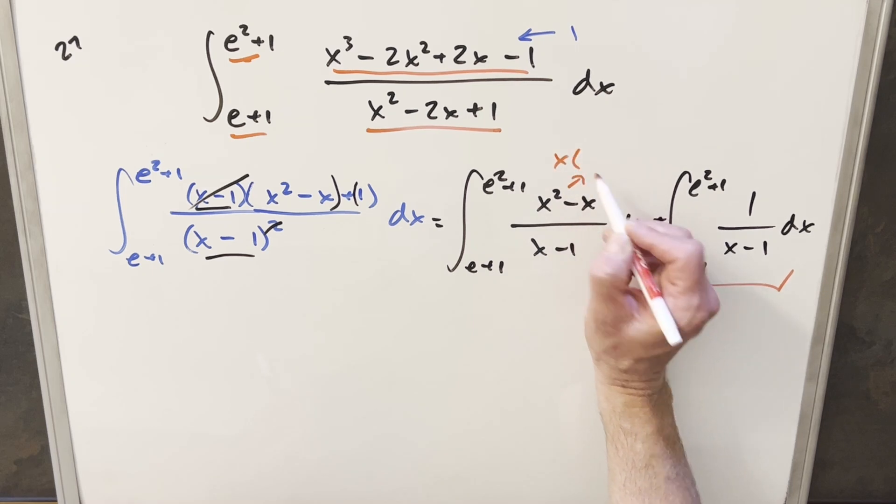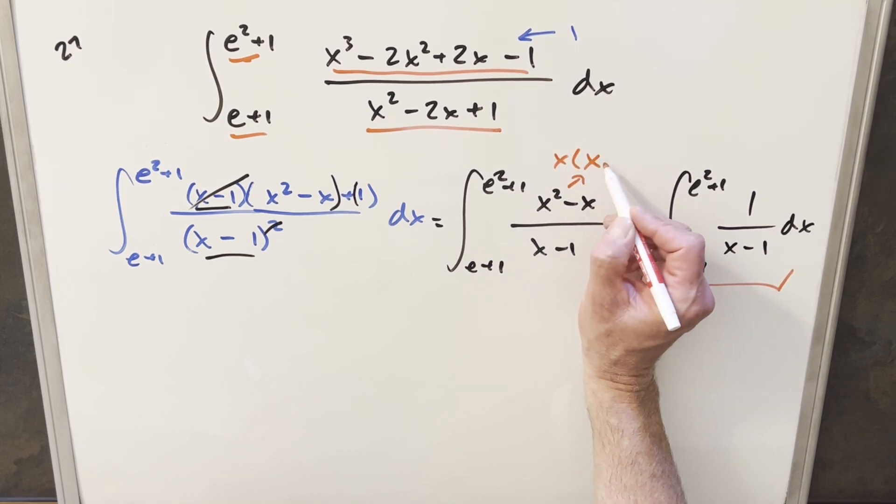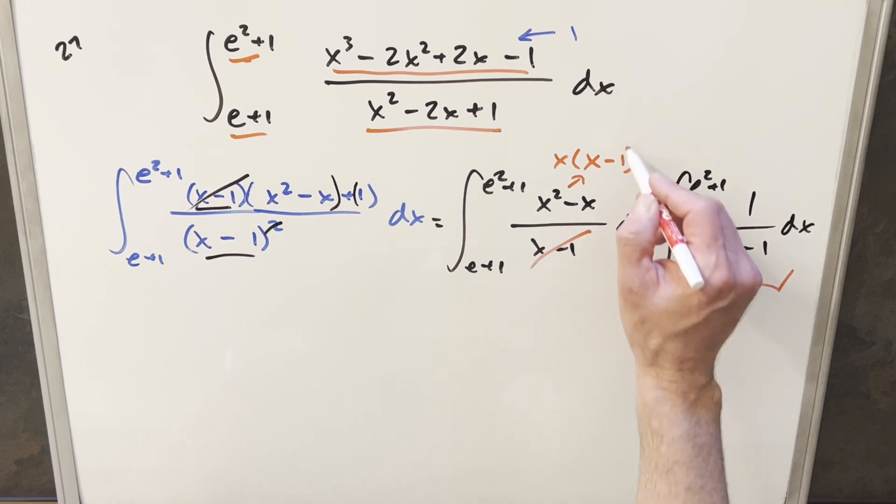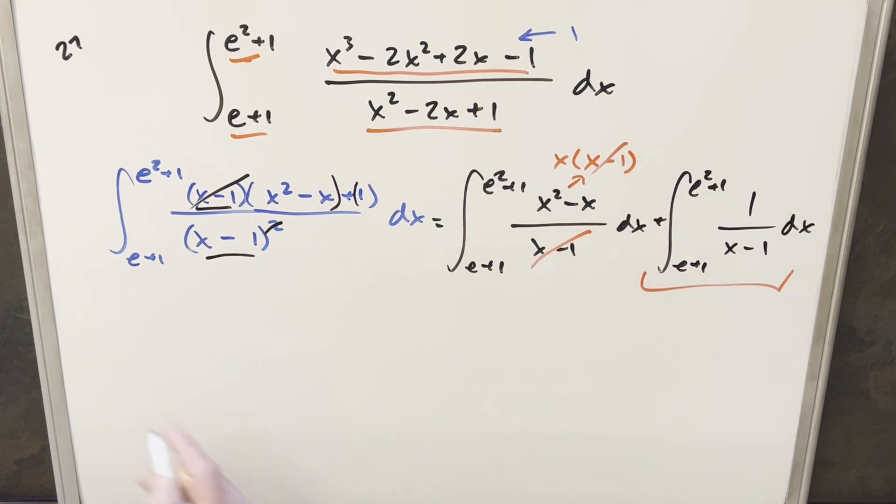And then this over here, x squared minus x, I can actually factor that. If I factor an x out of that, I get x times x minus 1. But then what happens is we can cancel x minus 1s again. So I'm just cleaning this up really quick. We have our bounds.